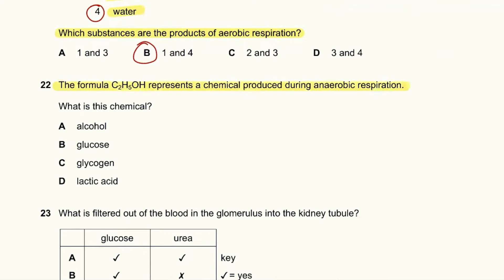Question 22: The formula CH₂OH represents a chemical produced during anaerobic respiration. What is this chemical? This chemical is an alcohol because there is an OH group — so it is an alcohol.